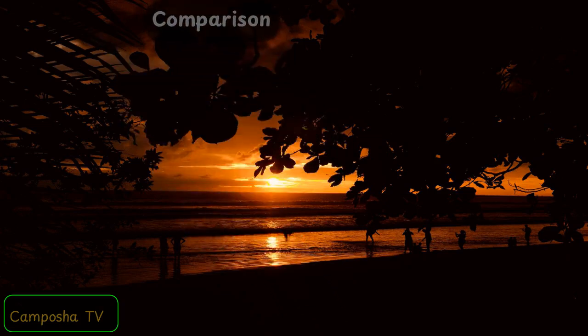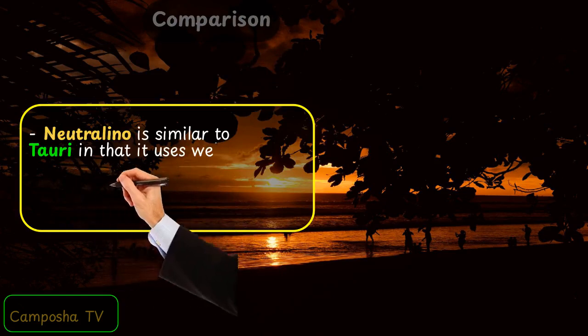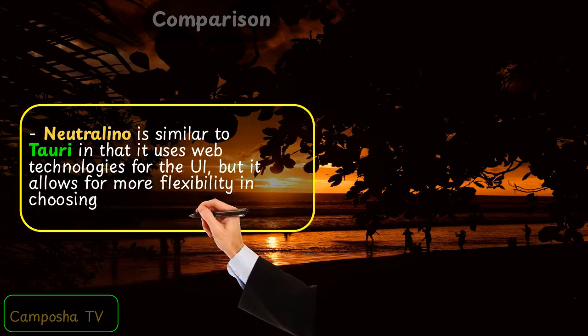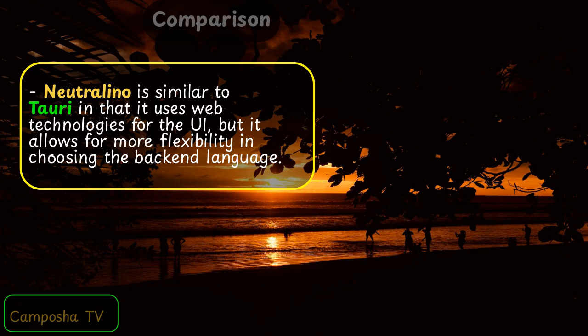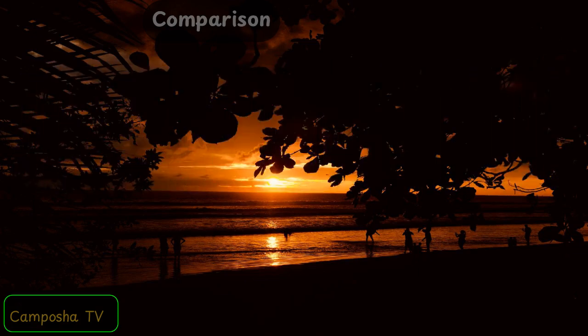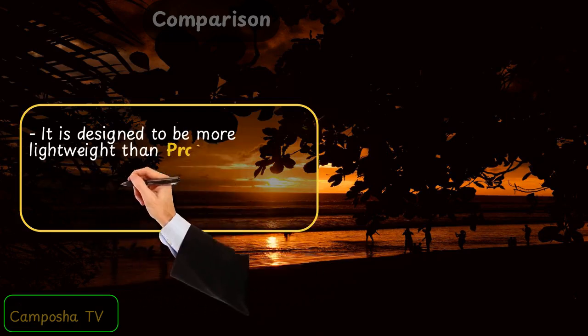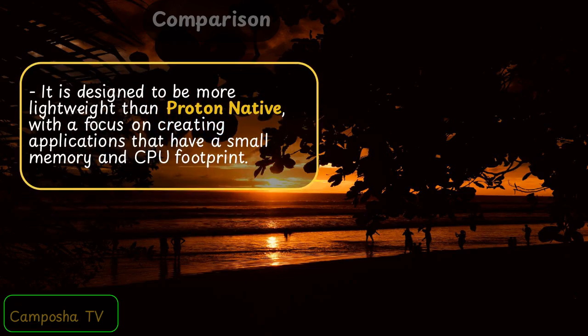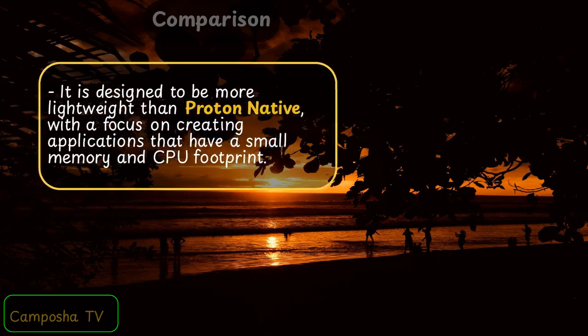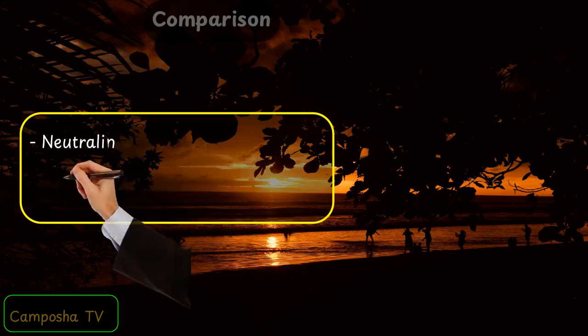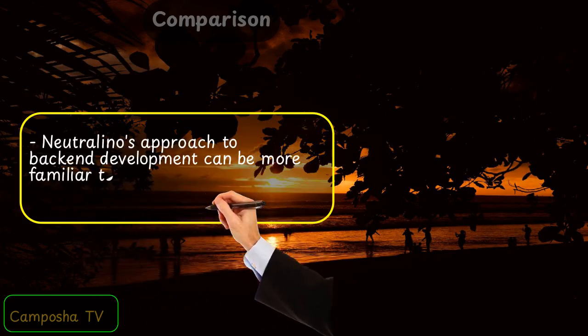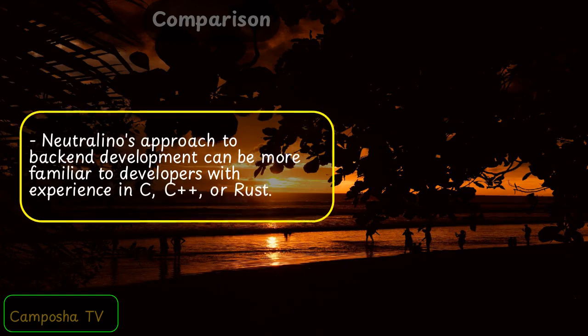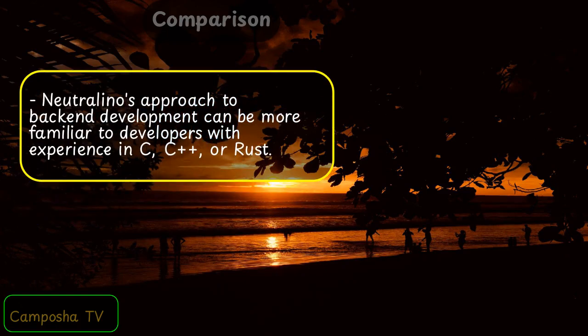Neutralino is similar to Torii in that it uses web technologies for the UI, but it allows for more flexibility in choosing the backend language. It is designed to be more lightweight than ProtonNative, with a focus on creating applications that have a small memory and CPU footprint. Neutralino's approach to backend development can be more familiar to developers with experience in C, C++, or Rust.